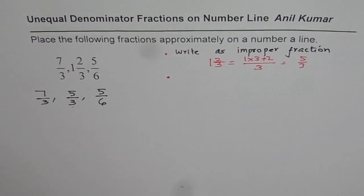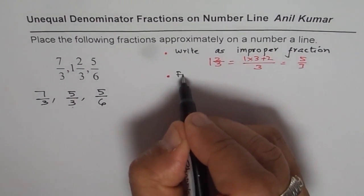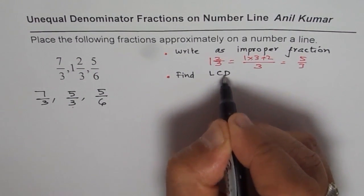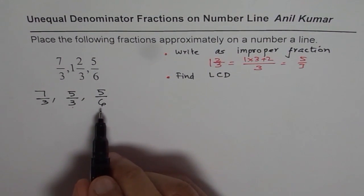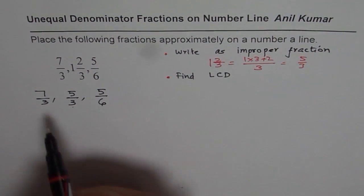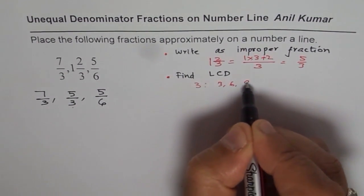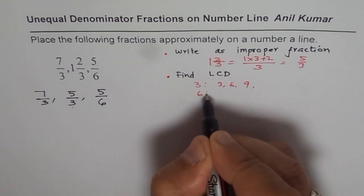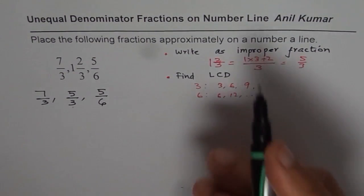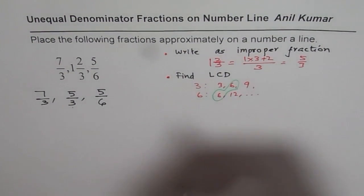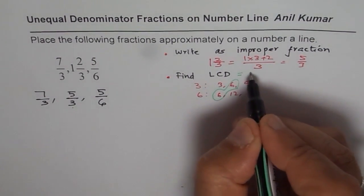The next step is we need to find lowest common denominator. We have discussed two different methods in our videos. One of them is you can actually write down the multiples. Multiples of 3 are 3, 6, 9. Multiples of 6 are 6, 12 and so on. Which are common multiples? 6. So 6 becomes our lowest common denominator.